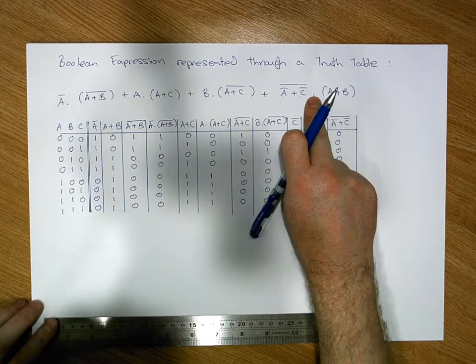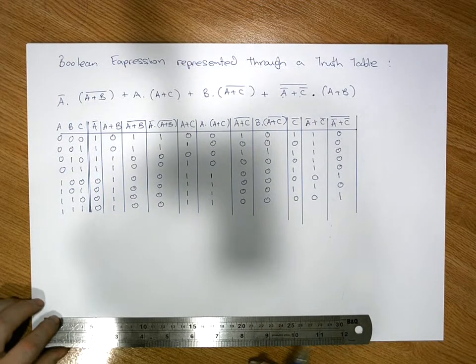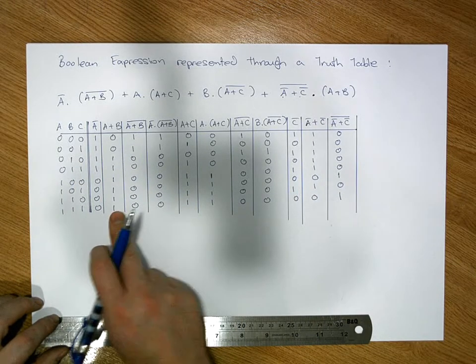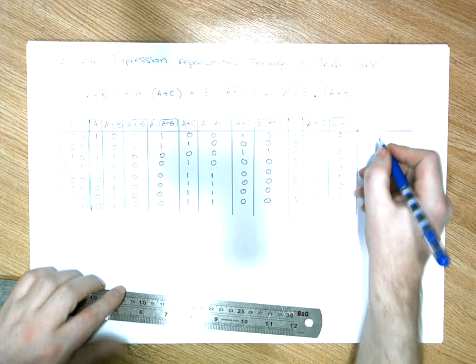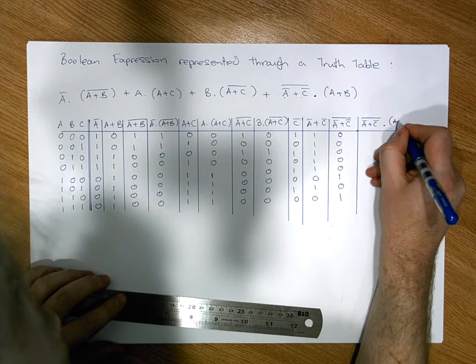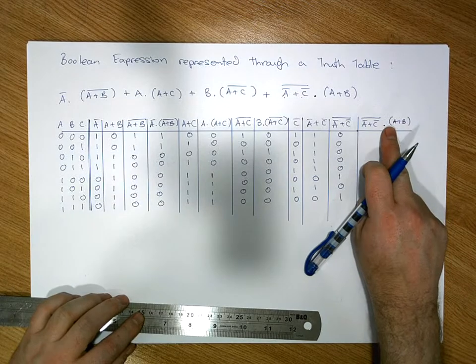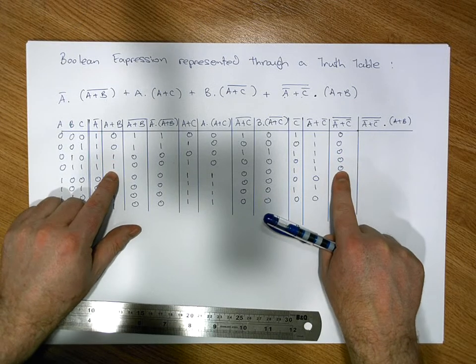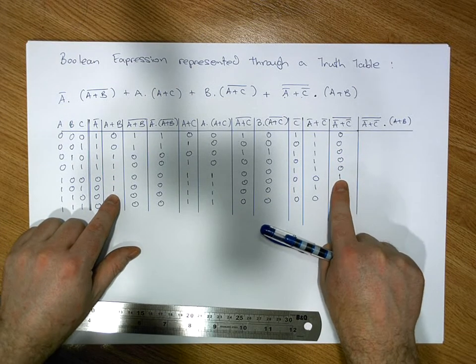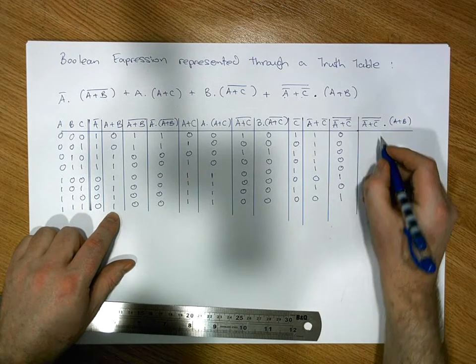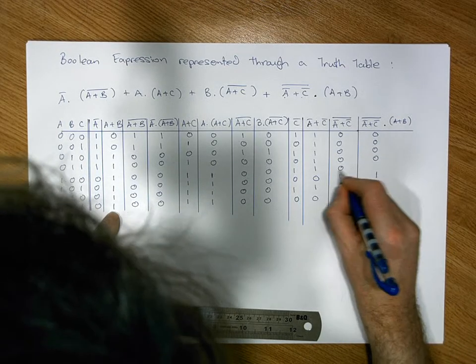We've calculated the left-hand side of the final AND. The right-hand side is A OR B, which we already have in the third column. ANDing (A-bar OR C-bar)-bar with (A OR B): an AND only gives a one when both are simultaneously one. Checking each row, we get simultaneous ones only at rows six and eight, giving ones there and zeros everywhere else. That completes the fourth term.